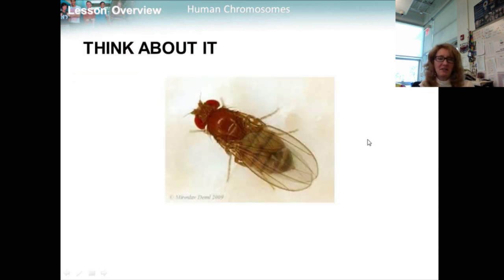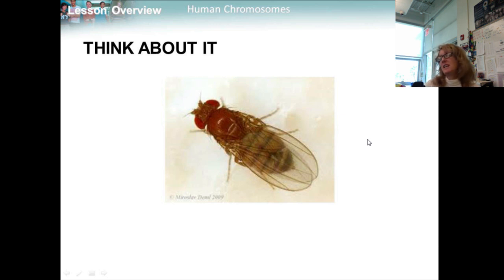If you had to pick an ideal organism for the study of genetics, would you choose one that produced lots of offspring, was easy to grow in the lab, and had a short lifespan that allowed you to do several crosses per month — like fruit flies? The reasons are obvious why — it's a model specimen.